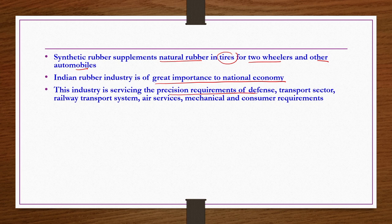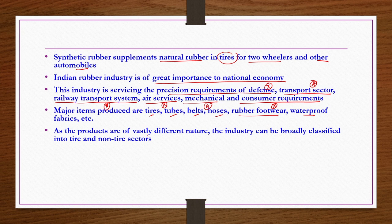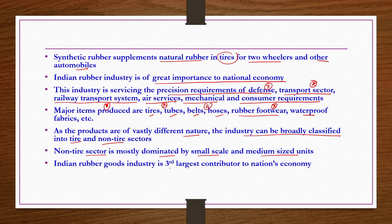Leading rubber-producing state in India is Kerala, accounting for nearly 25 percent of annual rubber production. Northeastern states particularly Tripura, Assam, and Meghalaya are emerging as major rubber-producing states. Indian rubber industry is of great importance to the national economy, servicing defense, transportation, railway, air services, mechanical, and consumer requirements. The industry can be broadly classified into tire and non-tire sectors, with the non-tire sector mostly dominated by small-scale and medium-sized units. Indian rubber goods industry is the third largest contributor to the nation's economy.